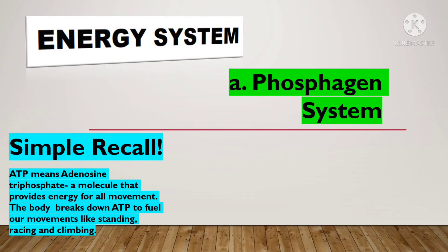Now, let us have our simple recall. What is ATP? ATP means adenosine triphosphate. This is a molecule that provides energy for all movement. The body breaks down ATP to fuel our movements like standing, racing, and climbing.